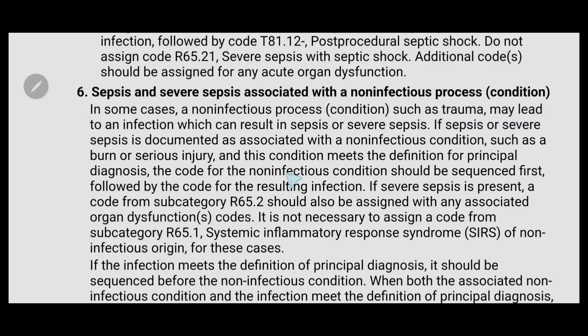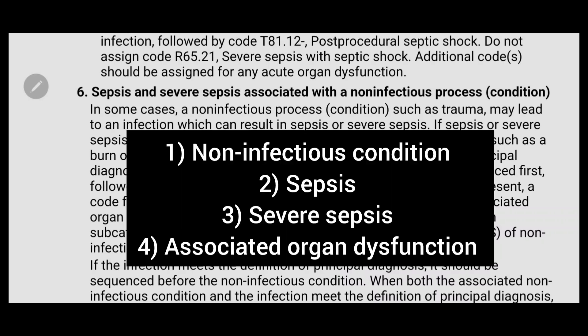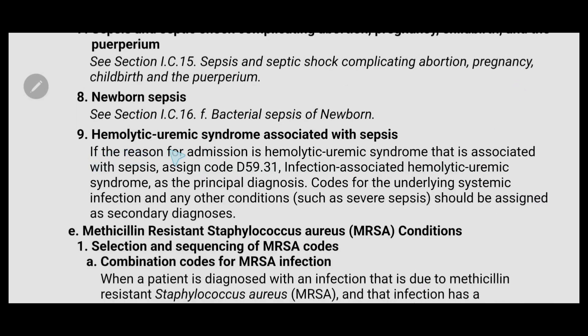For sepsis and severe sepsis associated with a non-infectious process or condition, the first code should be the non-infectious condition, the second code should be sepsis, the third code is severe sepsis R65.2 if present, and the fourth code will be any associated organ dysfunction. For hemolytic uremic syndrome associated with sepsis, if the reason for admission is hemolytic uremic syndrome, code D59.31 as the principal diagnosis, and codes for any underlying systemic infection should be assigned as secondary diagnosis.